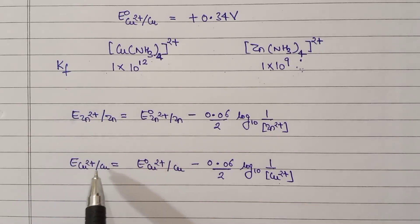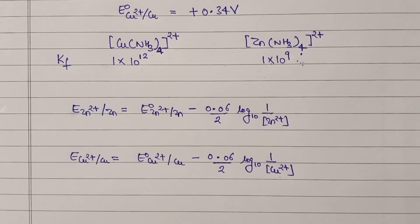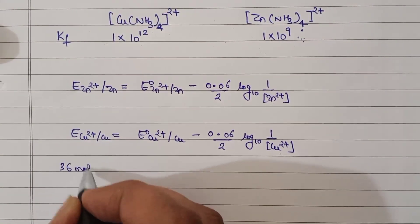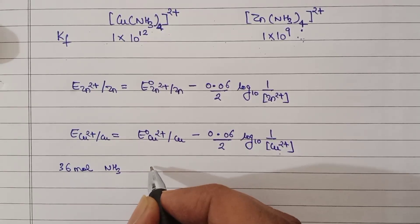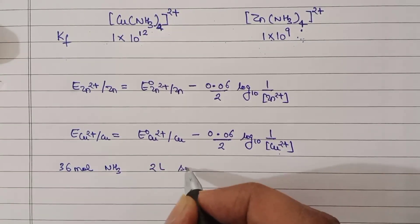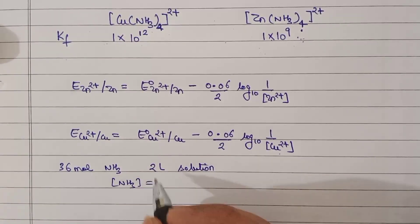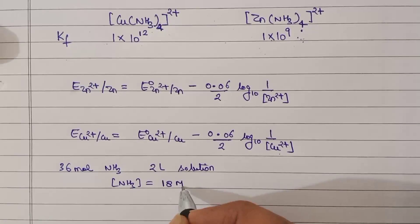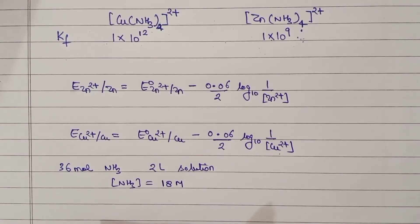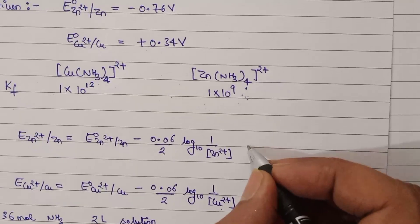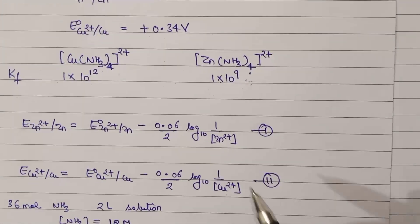We need to determine the concentrations of Zn²⁺ and Cu²⁺ in solution after passing ammonia — that will tell us the reduction potentials. As given, 36 moles of ammonia gas is passed through a 2-liter solution, so the concentration of ammonia added is 36/2 = 18 molar. The solution contains both Zn²⁺ and Cu²⁺ initially at 1 molar. Let's call the Nernst equations for Zn and Cu equation 1 and equation 2 respectively.